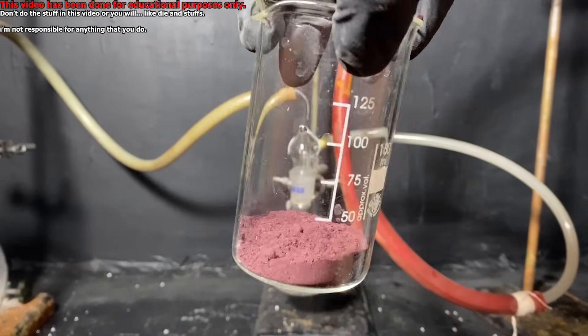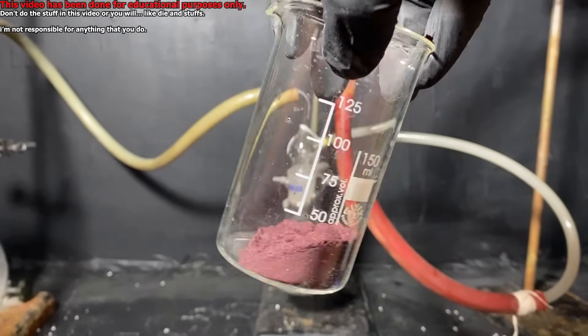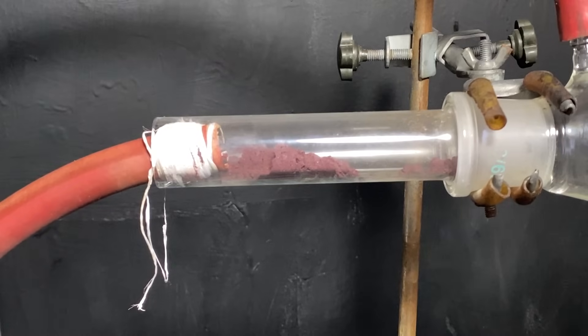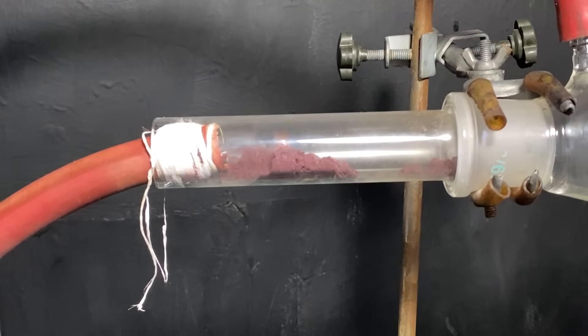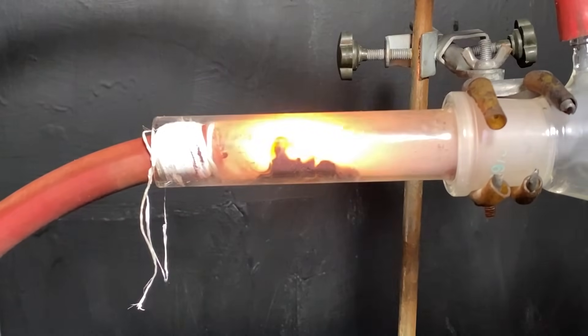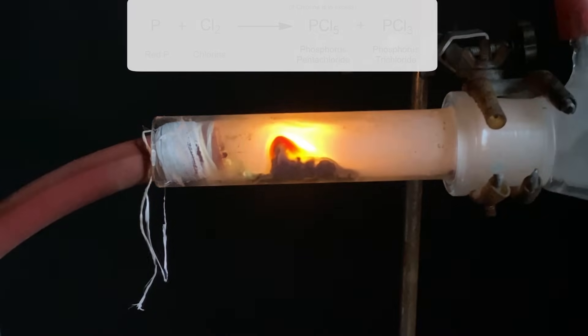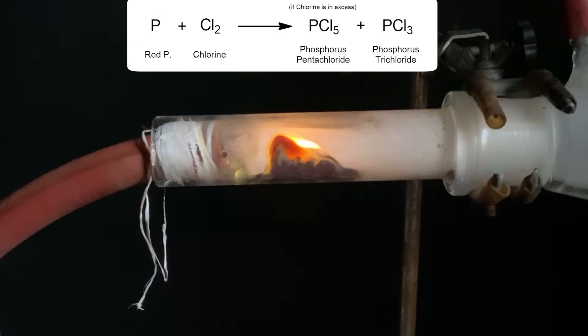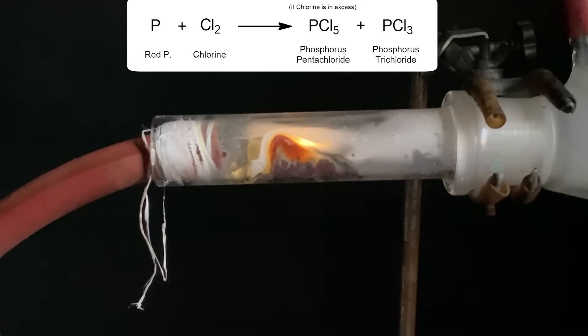Here you can see me weighing out some red phosphorus, and damn, it actually looks really nice when it's pure. The red phosphorus was put into a glass tube, and I've turned on the chlorine gas generator. Immediately, once the red phosphorus touches the stream of chlorine, a reaction happens where red phosphorus combusts in a chlorine atmosphere to form phosphorus pentachloride, which is the mist that is collecting in the flask.